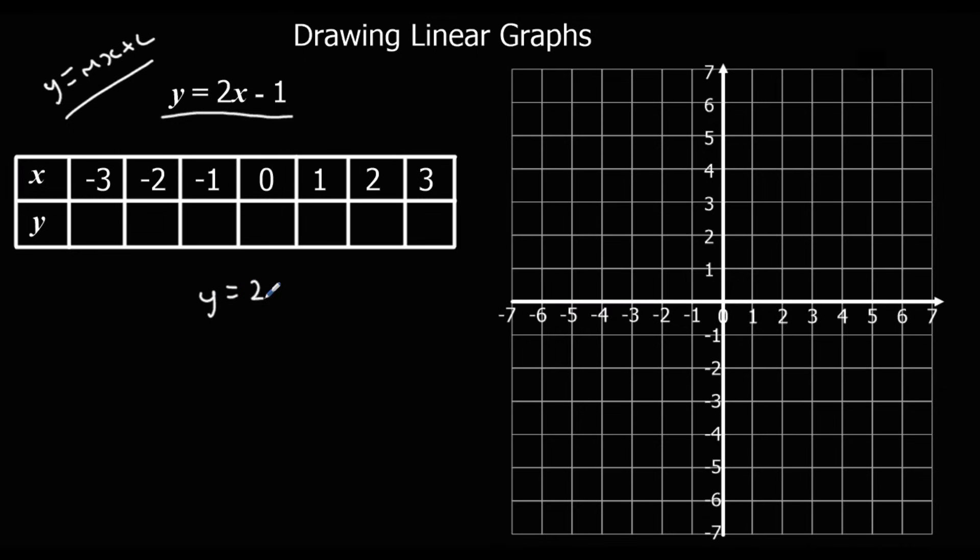So it's 2 times whatever the x value is, take away 1. So the y value is 2 times this number, take away 1. For the first one we've got 2 times 3 take away 1, so 6 take away 1 which is 5.